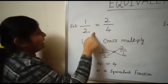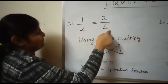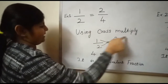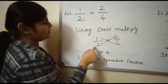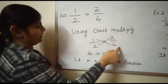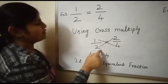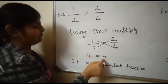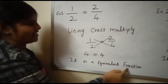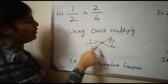Example: Is 1/2 equal to 2/4? Using cross multiplication — 1 times 4 is 4, and 2 times 2 is 4. The products are equal, so it is an equivalent fraction.